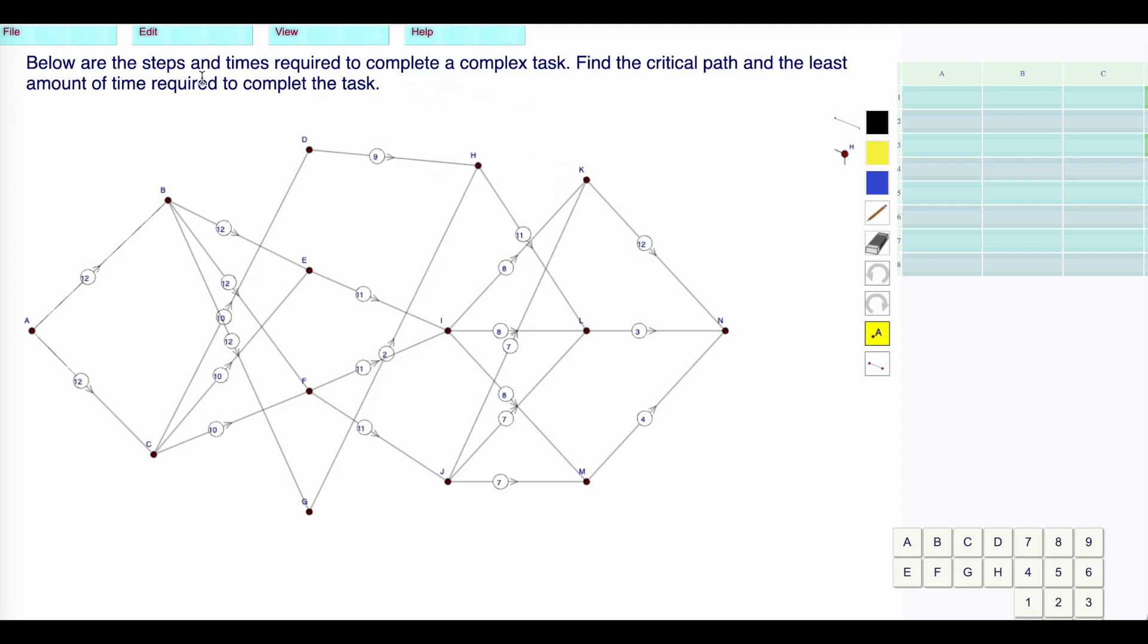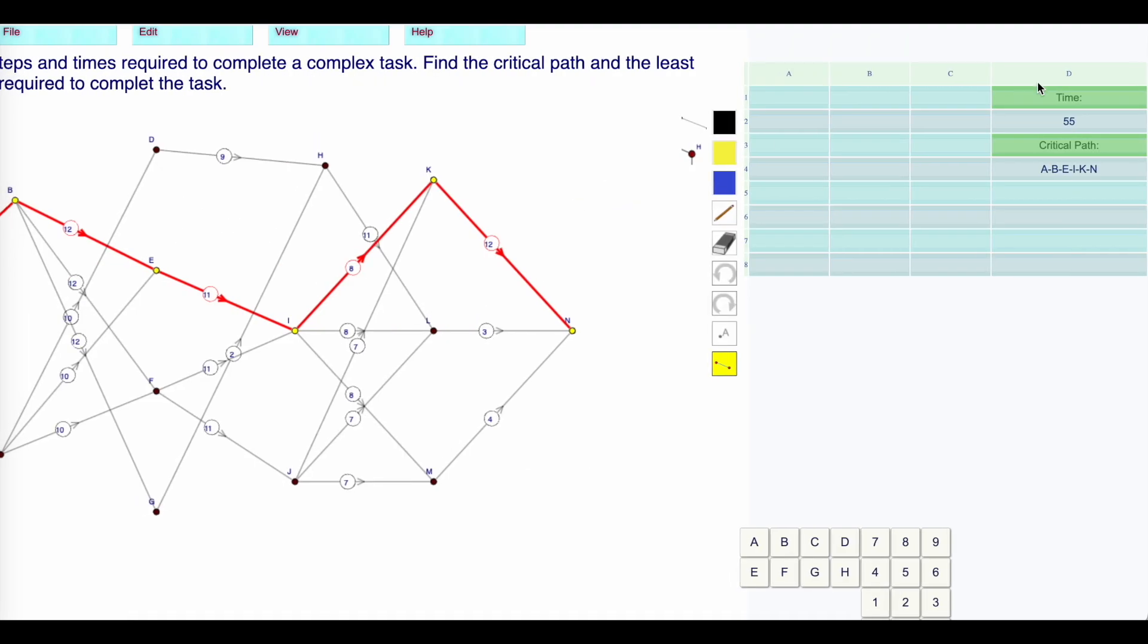All right, now I want to find the minimum time required to complete this complicated task. That is the maximum path. If I start with 12, let's say I move to this one which brings me down to an 11, or I can move to this one which brings me to another 11, or I can go to this 11 and up to here. I have an 11, I have an 8, then I have a 12. That has a weight of 55.